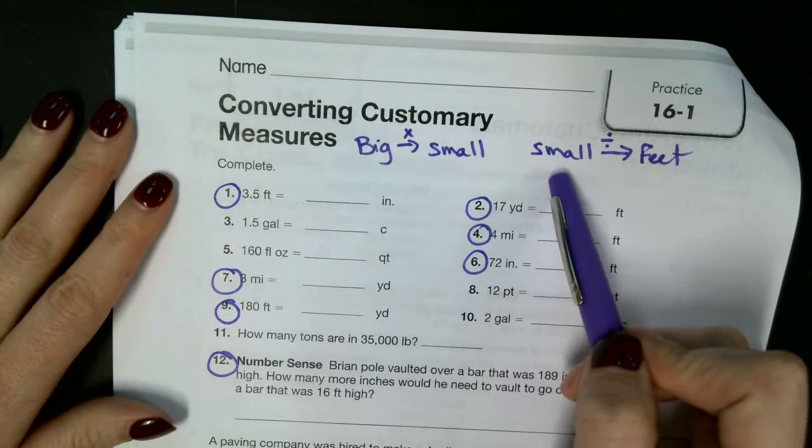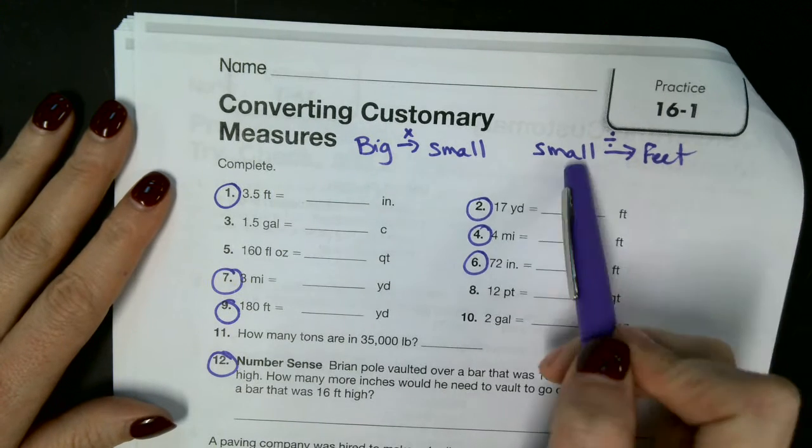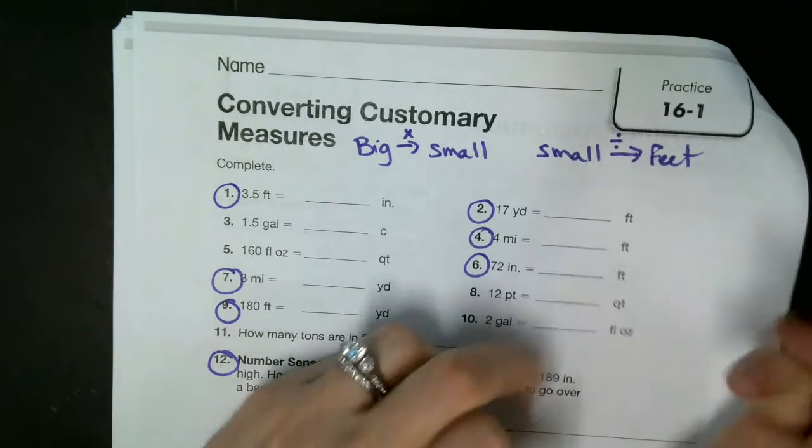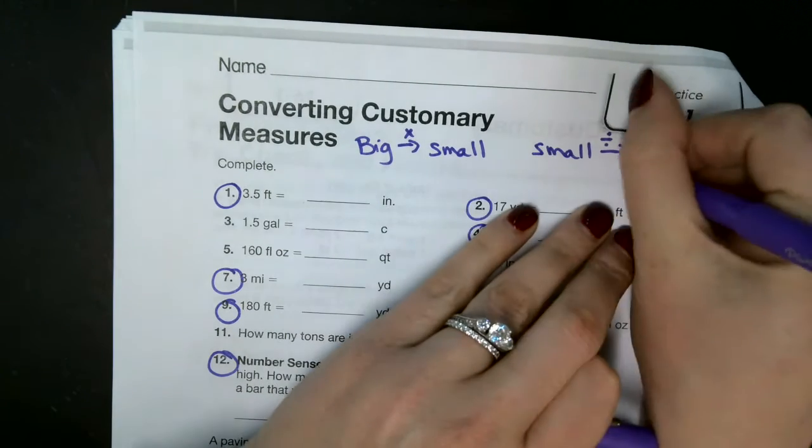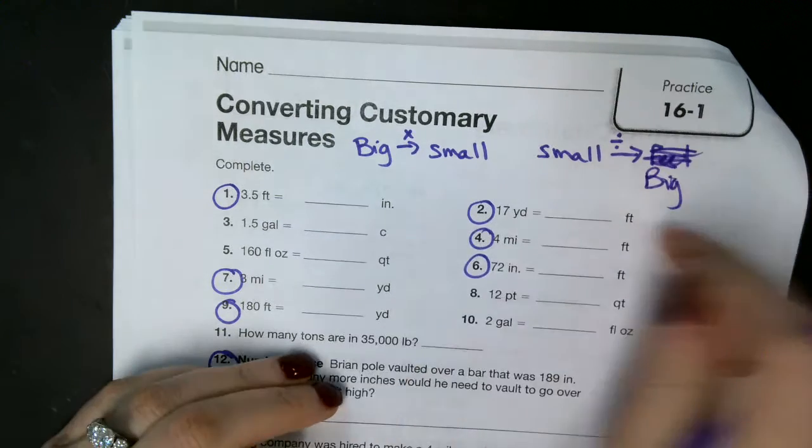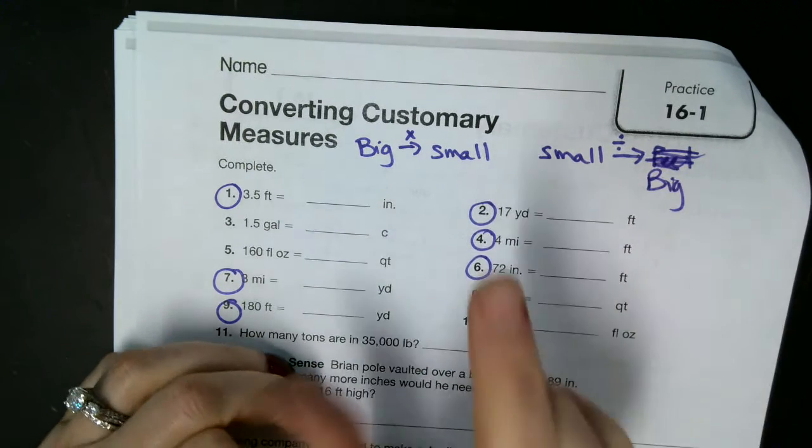If it's a small unit of measurement to a bigger unit of measurement, inches to feet - I wrote feet big - then we divide.